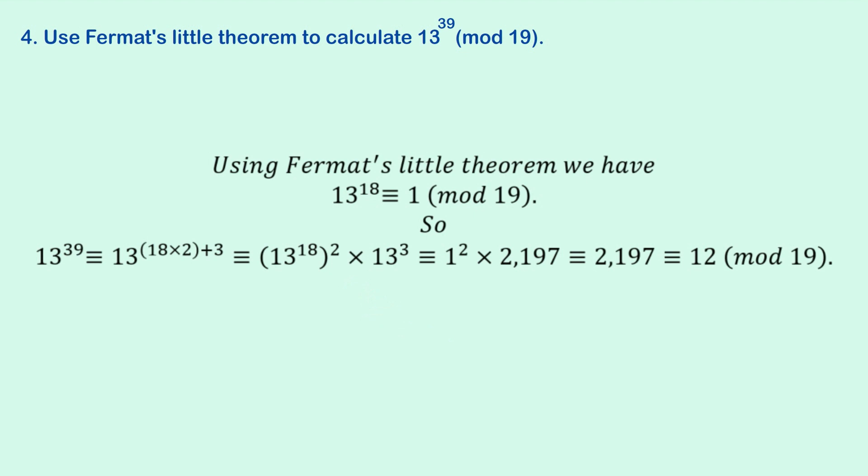And we've already worked out from question 3 that 13 to the 18 is 1. So, we've got 1 squared times 2,197, which is 2,197. And when you work all that out, you see that when you divide that by 19, you get a remainder of 12.